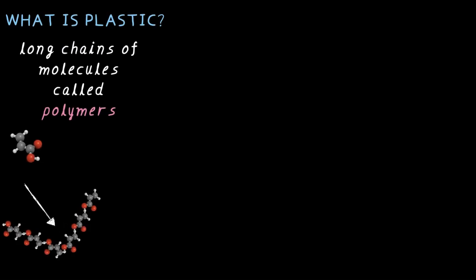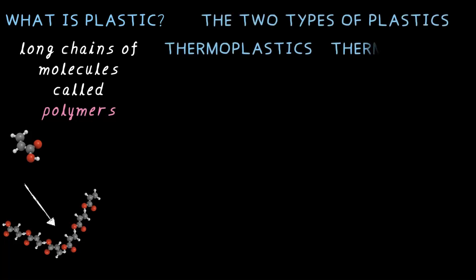So, what is plastic? Long chains of molecules called polymers. They are formed by snapping small structures into a larger structure like these. There are two types of plastics: thermoplastic and thermosetting plastic.